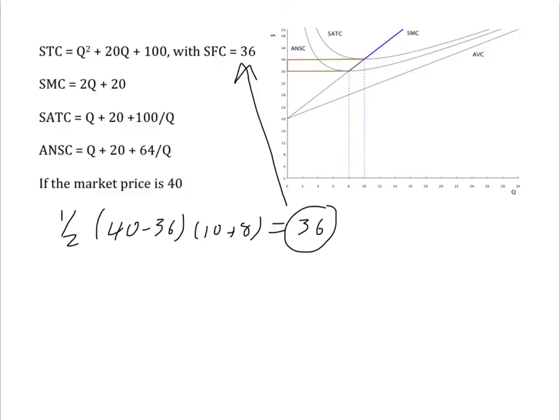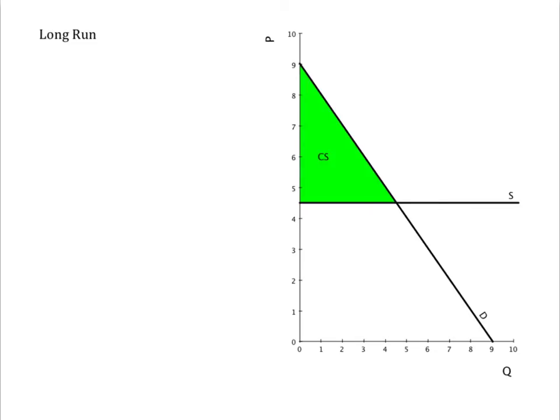But what about in the long run? In the long run, there is no fixed cost, sunk or avoidable, and entry and exit erodes any economic profit or loss. With free entry, one would expect long-run supply to be horizontal, so there should be no producer surplus. One would only see producer surplus in the long run if long-run supply were upward sloping. So, how can we get long-run supply to be upward sloping?